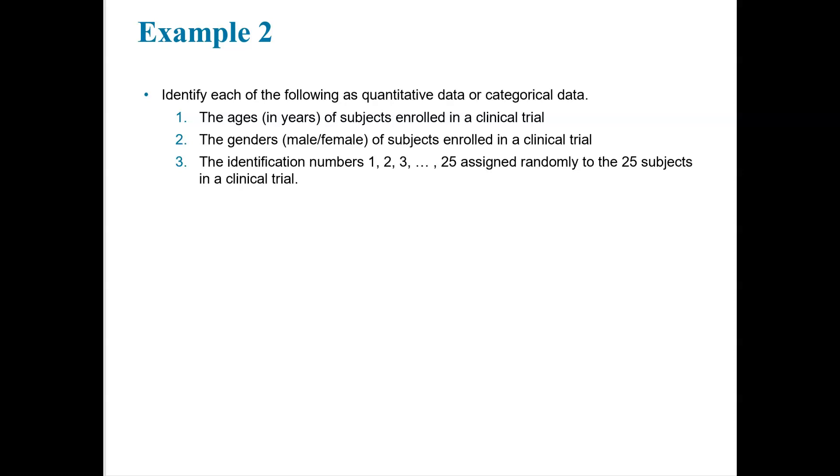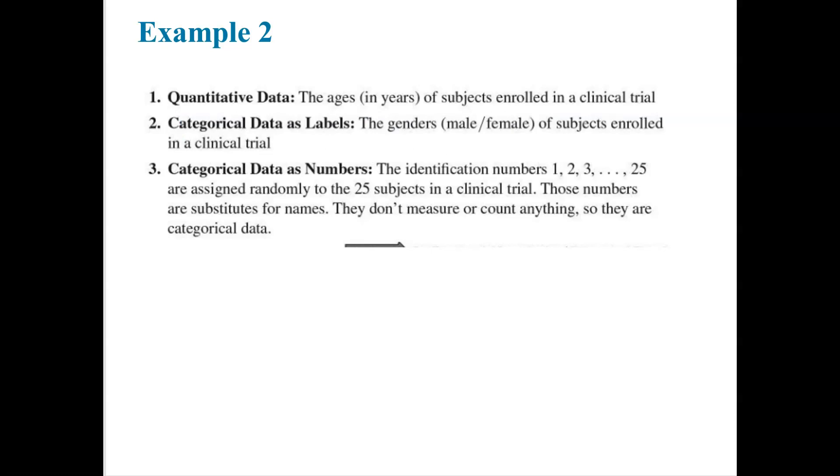The genders are labels. They're male, female. We can't add or subtract the word male and female. So those are categorical or qualitative data. Now the last one's a little confusing because it is a number, but these are identification numbers. They're almost like names of people. It wouldn't make sense to do three minus one here because it's subtracting names. So it's categorical data even though it is a number.